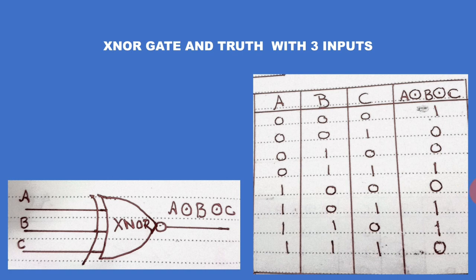Now for the three-input XNOR gate with inputs A, B, C — observe the operator circle-dot. Truth table: first row no ones — output is one. Second row single one — odd — output is zero. Third row single one — odd — output is zero. Fourth row one-one — even — output is one. One-zero-zero has one one so output is zero. One-zero-one has two ones — even — output is one. One-one-zero — even — output is one. Last row one-one-one has three ones — odd — so output is zero.